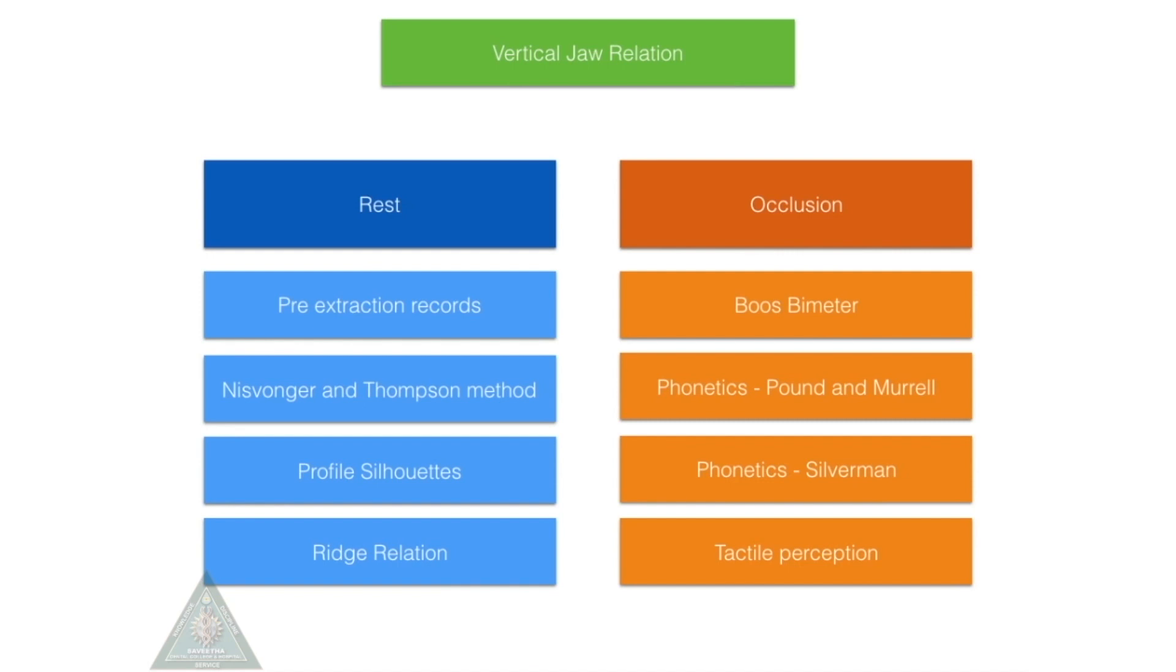Phonetics with Pound and Murals method is asking the patient to say F, V, and S. When you say these letters, usually the upper teeth will touch the lower lip, and that will give you optimal VD. If you have your mouth open and say F, you will see that it will sound wrong.